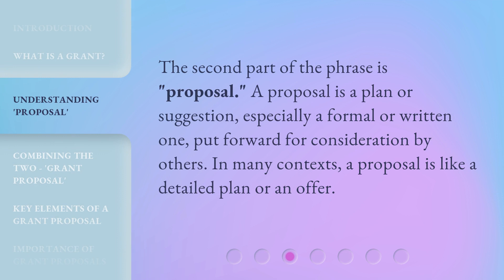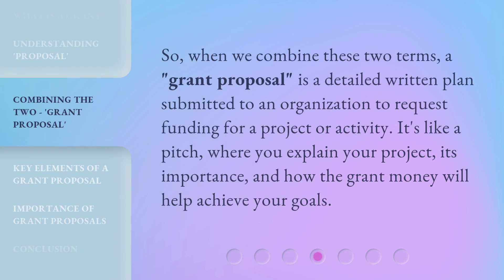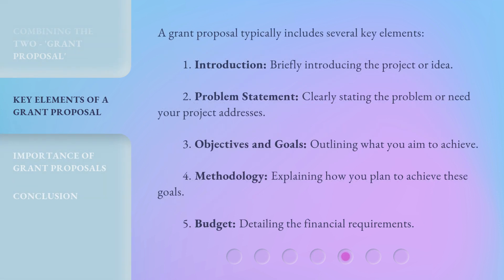The second part of the phrase is proposal. A grant proposal typically includes several key elements: 1. Introduction — briefly introducing the project or idea. 2. Problem statement — clearly stating the problem or need your project addresses. 3. Objectives and goals — outlining what you aim to achieve. 4. Methodology — explaining how you plan to achieve these goals.